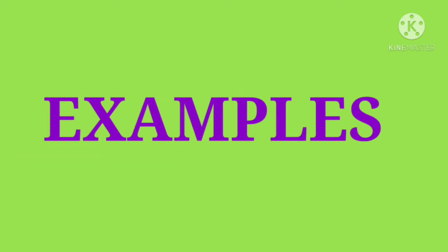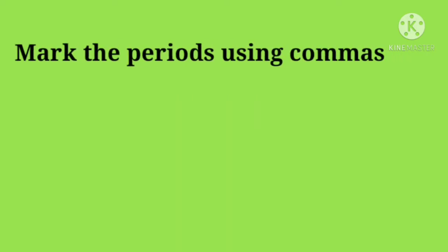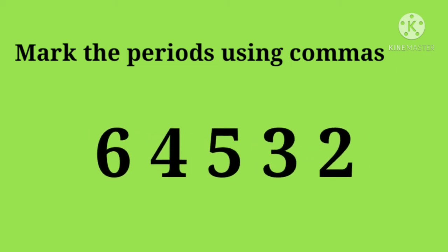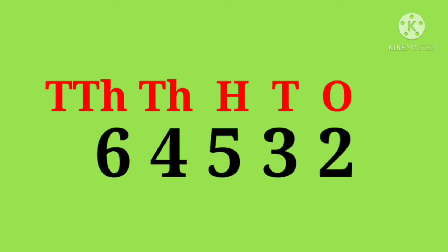Now let us look at some examples to clear this. First, mark the periods using commas. The number given is 64532. Write the place values on top of the numbers and then put the comma between the 100s and the 1000s place.